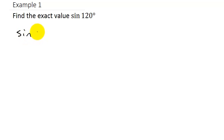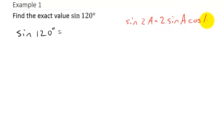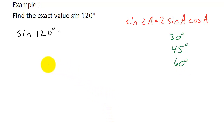Let's get started with our first example: we have sine of 120 degrees. We're going to use the double angle identity for sine: sine of 2a equals 2 sine a cosine a. We need to get this to a value we know — the sine, cosine, and tangent of 30, 45, and 60 degrees. We can rewrite sine of 120 as sine of 2 times 60 degrees.